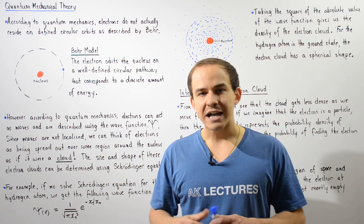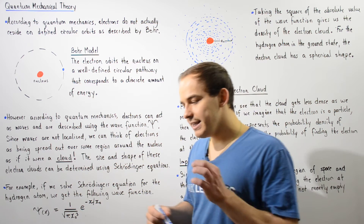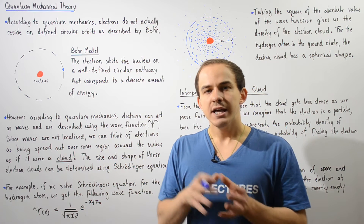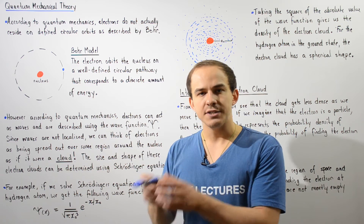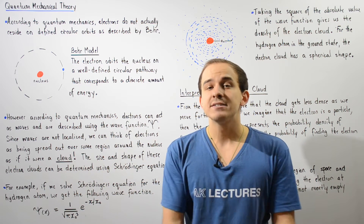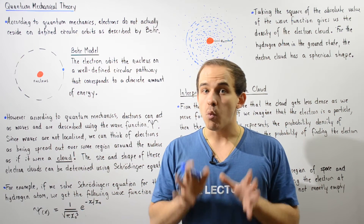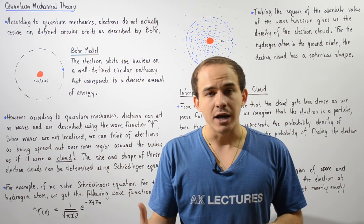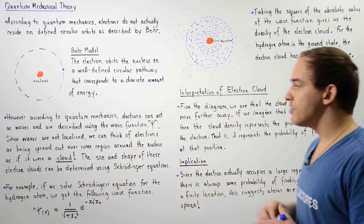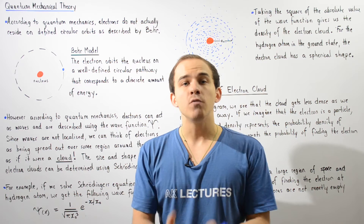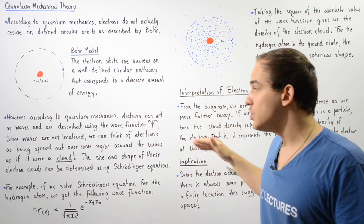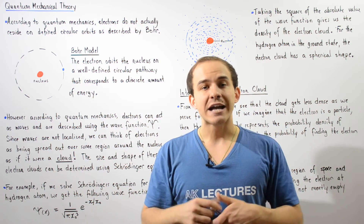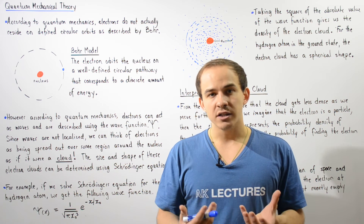What exactly is the difference between a particle and a wave? A particle is an object found within a localized region in space, whereas a wave extends over a very large region of space — a wave is not localized. Since waves are not localized and electrons can behave as waves, we can think of electrons as being spread out over a large region of space around the nucleus, as if they were clouds — known as the electron cloud.